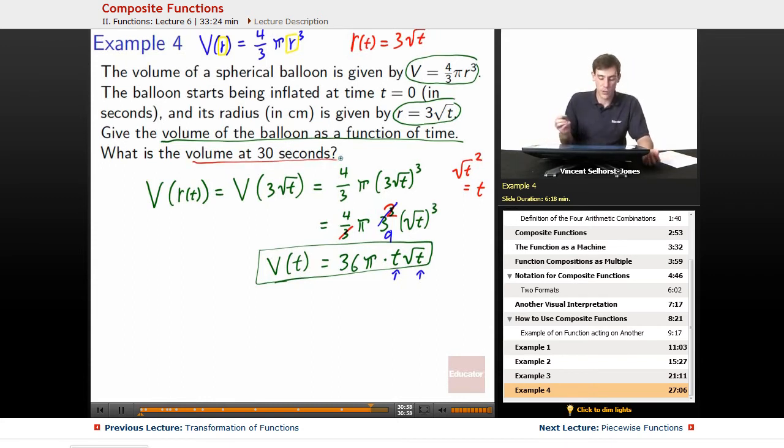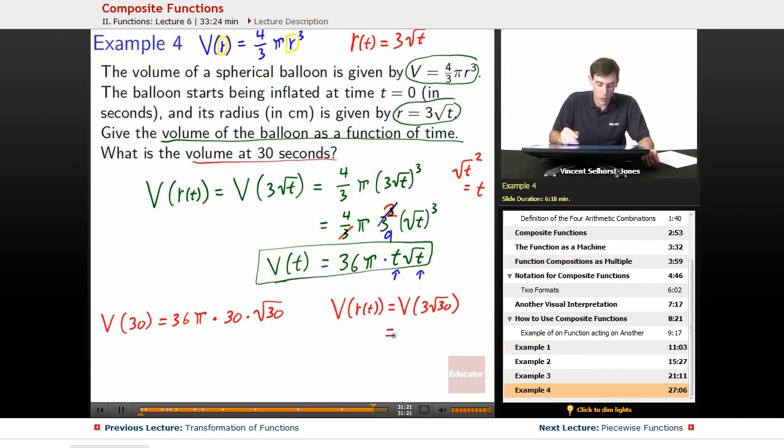Next part: volume at 30 seconds. We've got two options for how to do this. We could plug in to the function that we just built, volume at 30 equals 36 pi times 30 times square root of 30, or we could plug in volume of radius at time t, which would be volume of 3 times square root of 30, which would be equal to 4 thirds pi quantity 3 root 30 cubed. And it winds up being the case that these two things wind up equaling the exact same thing.